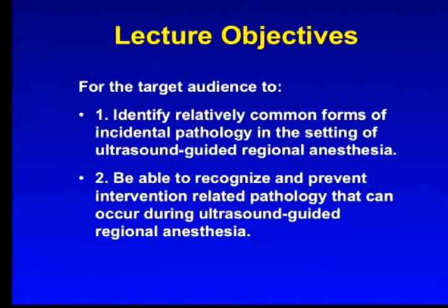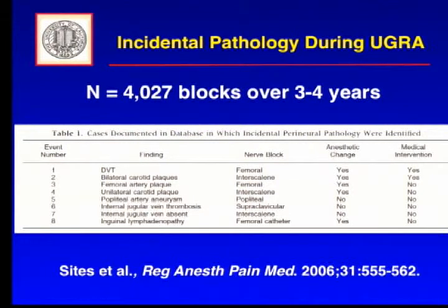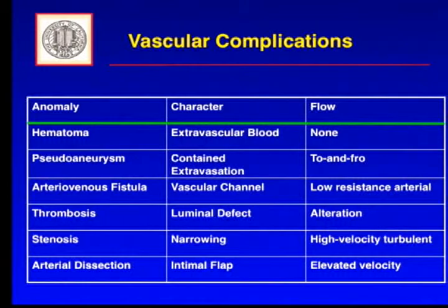I'll start first with vascular pathology, which is a big category — probably the most common thing you're going to encounter. This is a very nice article that Brian Seitz wrote back in the infancy of ultrasound-guided regional anesthesia. In this big series of 4,000 blocks, there are actually eight cases. It's not a high number, but almost all of these eight are vascular pathology, so it's probably the most common thing you're going to encounter.